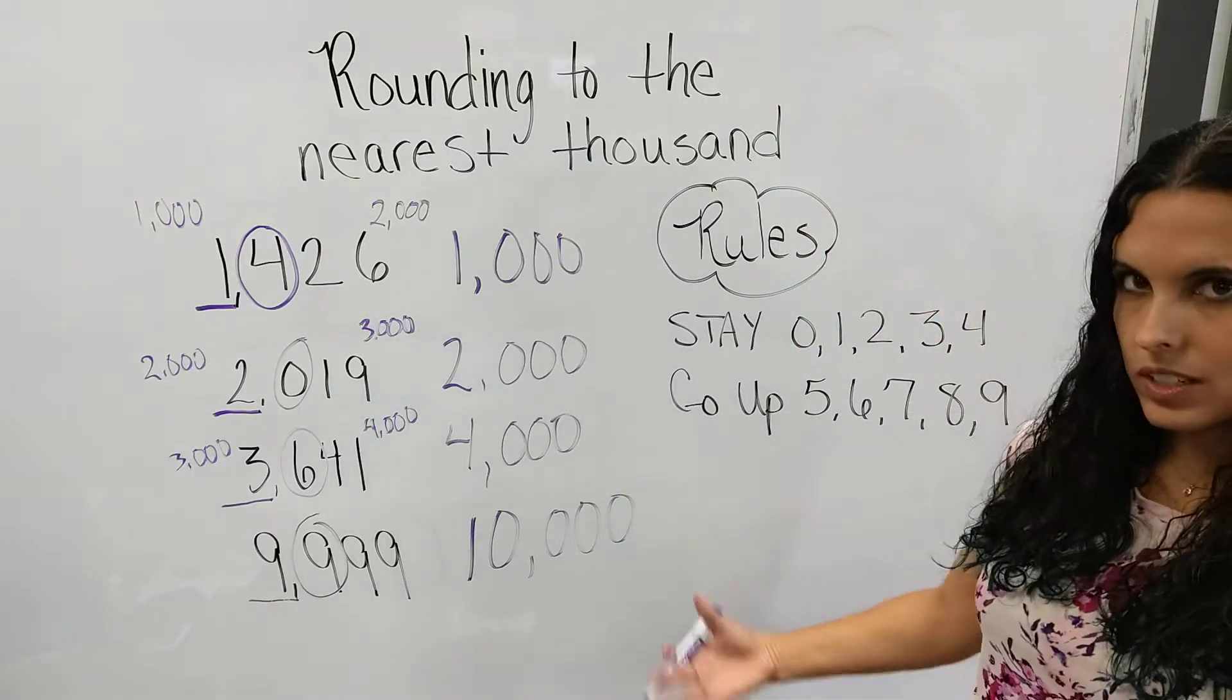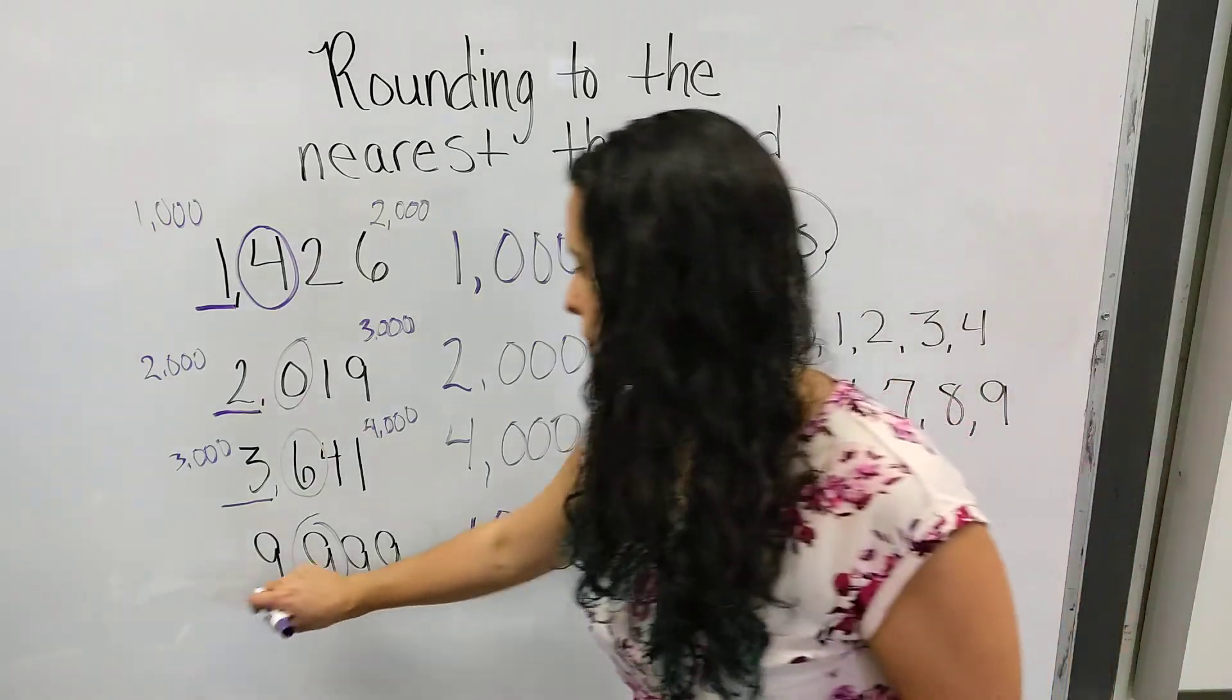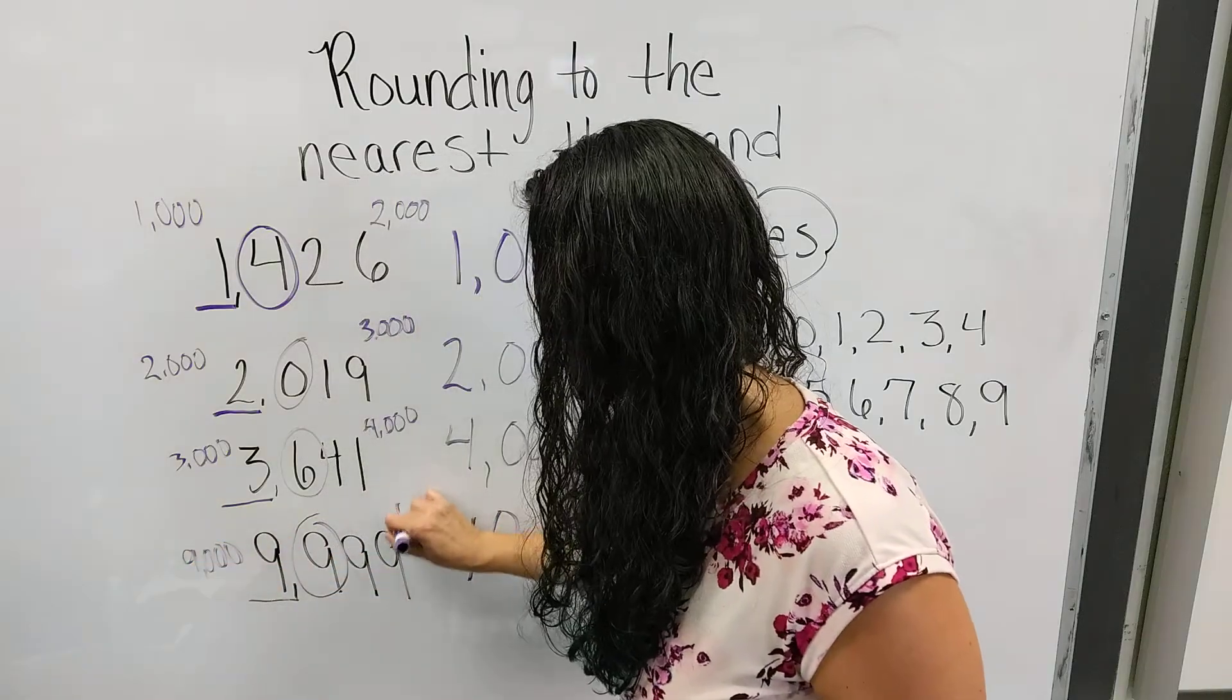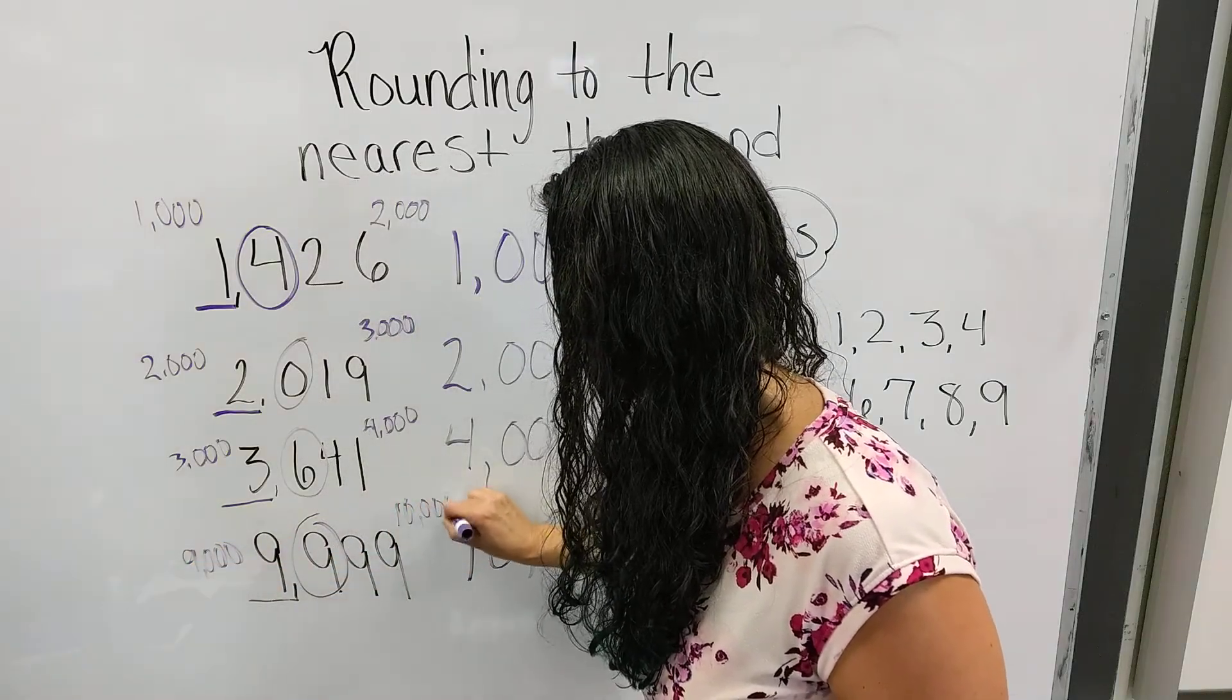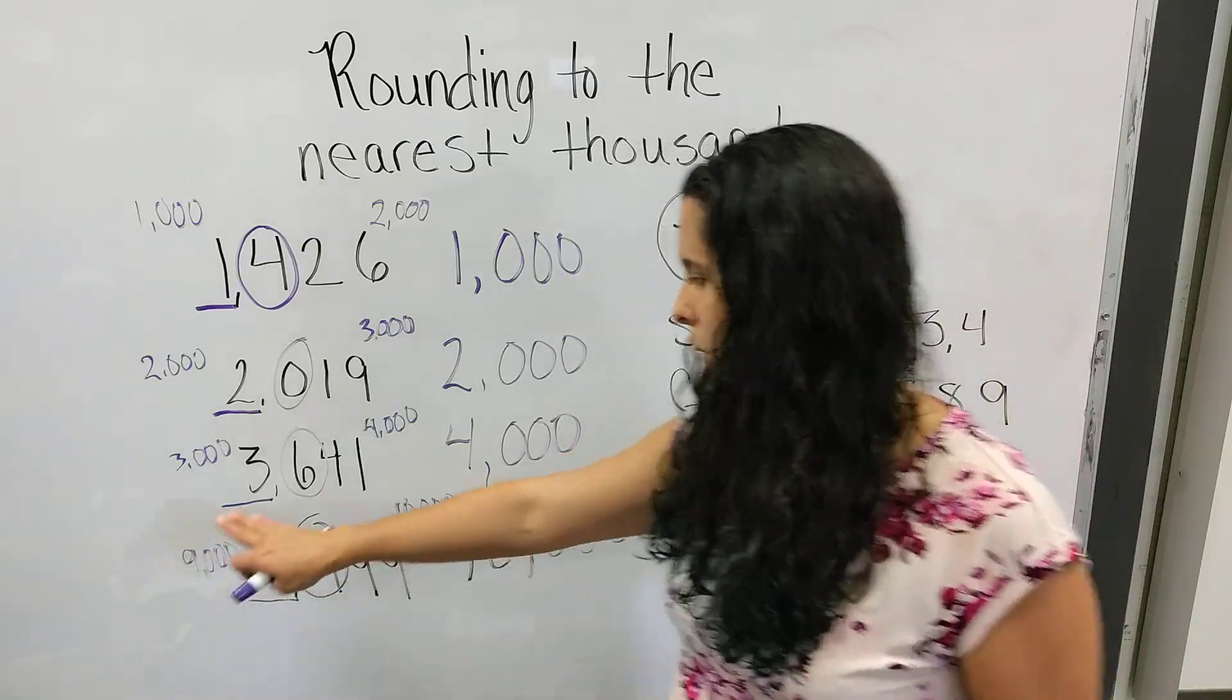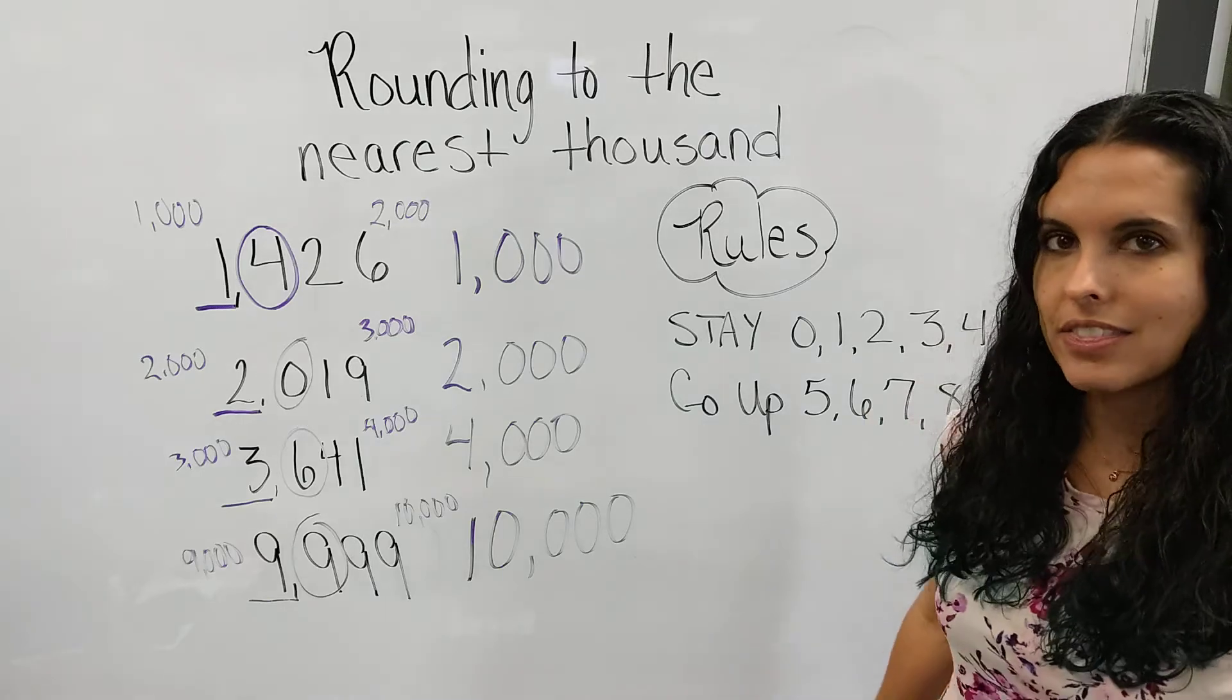So if I'm counting by thousands, it's between 9,000 and then it goes to 10,000. So on a number line, this 9 tells this 9 to go up. This 9 tells this 9 to go up, and it goes up to 10,000.